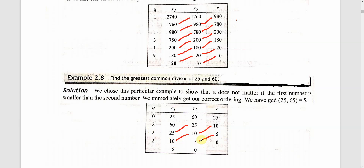We divide again: R1 by R2, that is 10 divided by 5. The quotient is 2 and the remainder is 0. Values are exchanged: R2 goes to R1 and remainder goes to R2. The required result is the value in R1. So GCD of 25 and 60 is equivalent to GCD of 60 and 25, which is equal to 5.